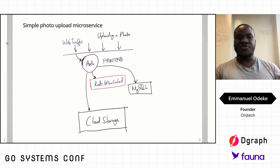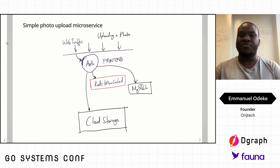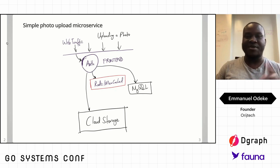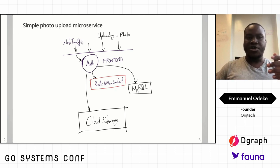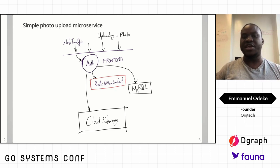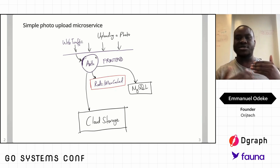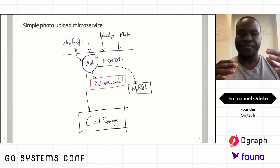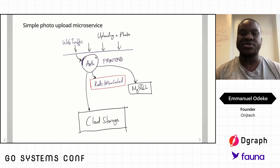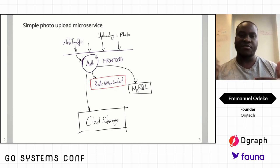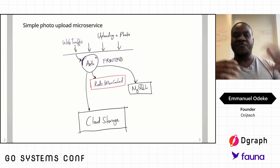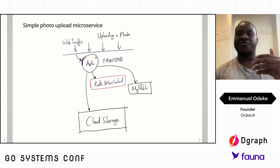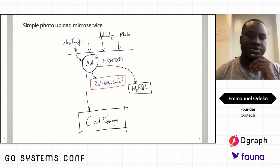To sweeten the talk, let's start with a really simple photo upload microservice — a low-budget Instagram. We don't have filters, but we allow you to upload your photos. You can see we get web traffic. As we upload a photo, the first thing you want to do is authenticate. When a request hits your front end, you authenticate who the user is, check your cache if you've authenticated them before, or hit the MySQL database. After verifying authentication, you accept the photo upload, send it to cloud storage, and return a response.